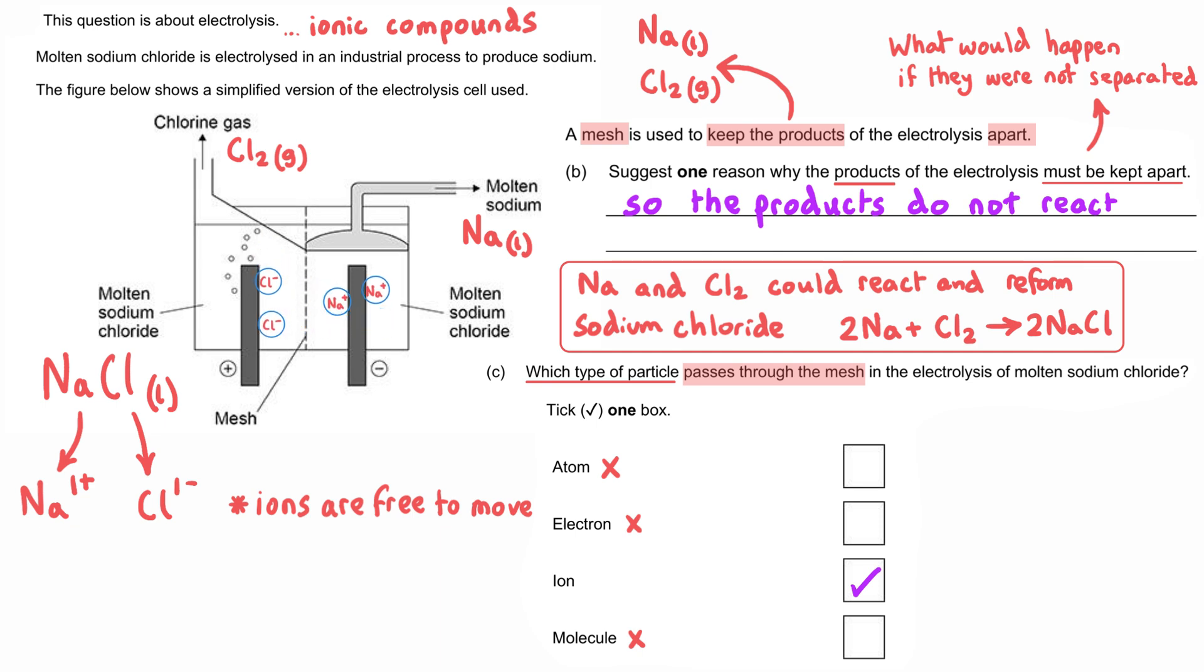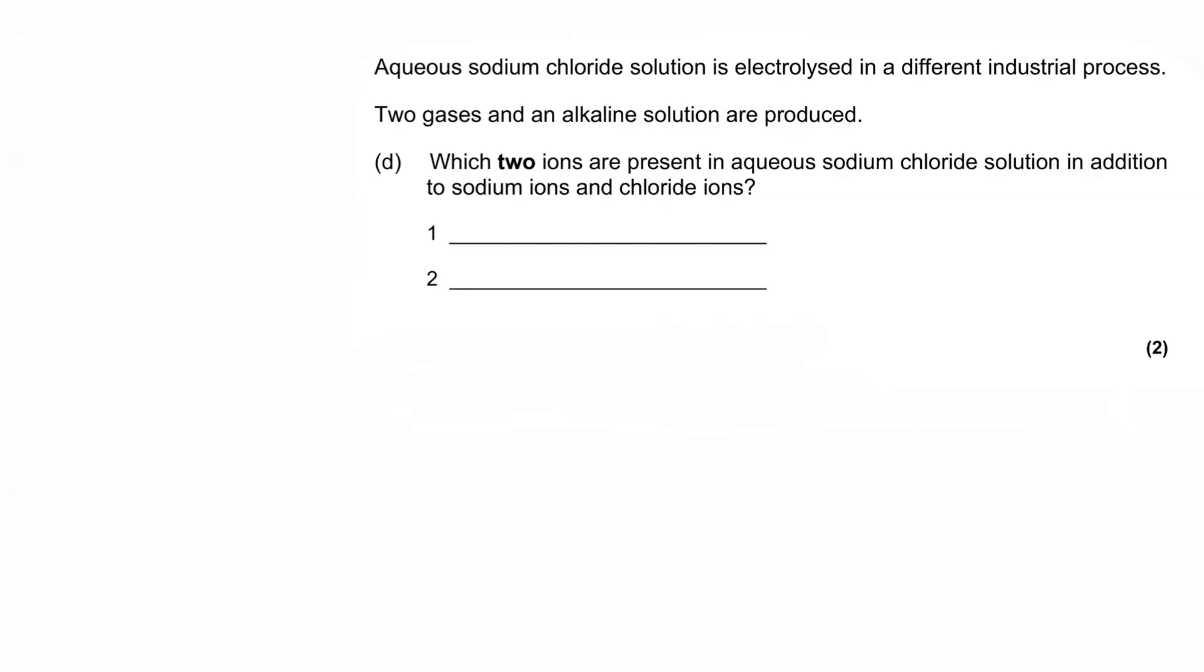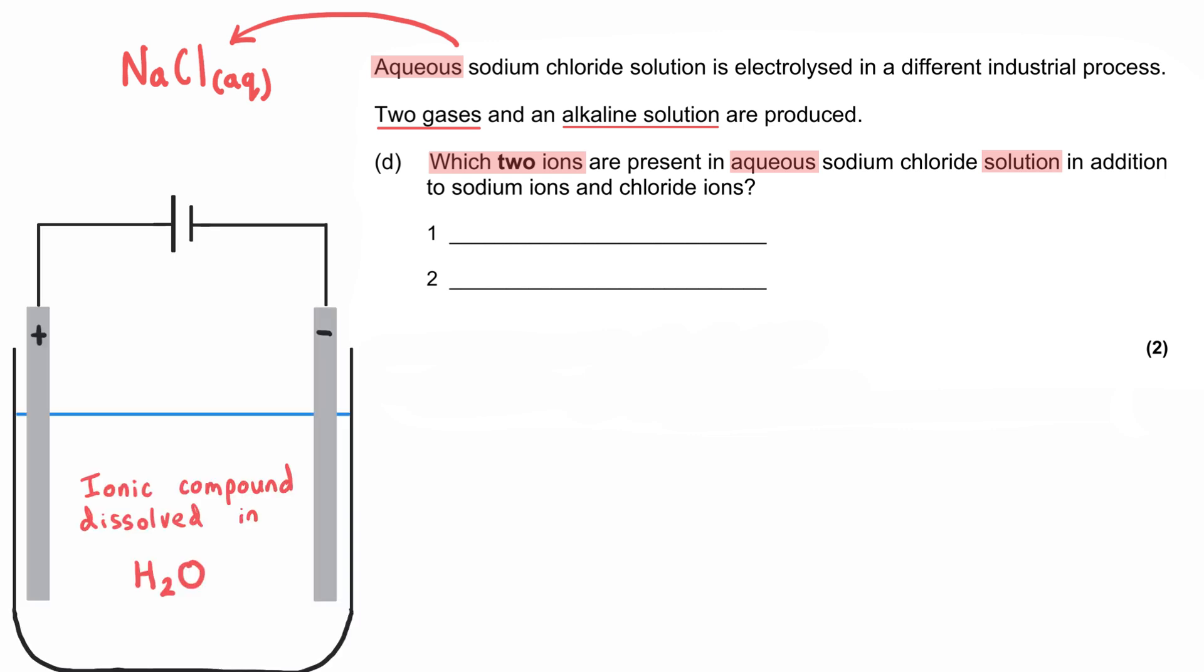Aqueous sodium chloride solution is electrolyzed in a different industrial process. Two gases and an alkaline solution are produced. Which two ions are present in aqueous sodium chloride solution in addition to sodium ions and chloride ions? Aqueous solutions means we've got an ionic compound dissolved in water, and these additional ions come from the water. Water naturally dissociates and produces small quantities of hydrogen ions, H+, and hydroxide ions, OH-.